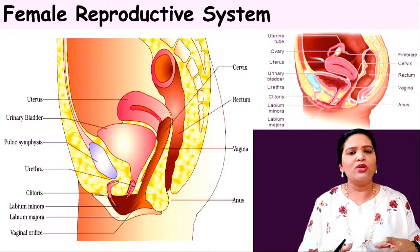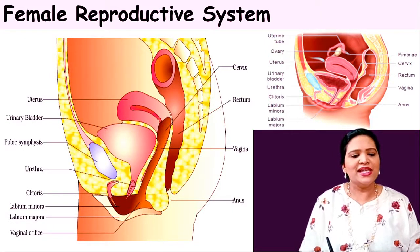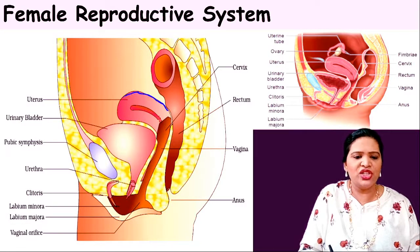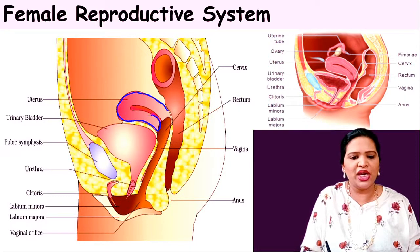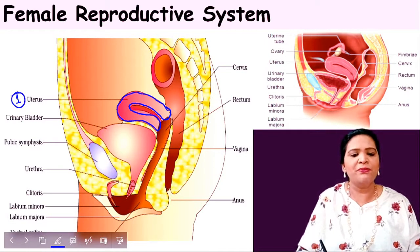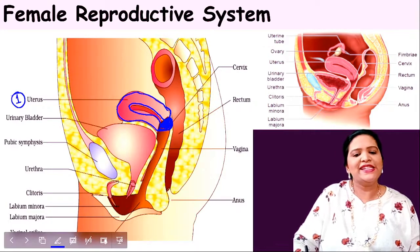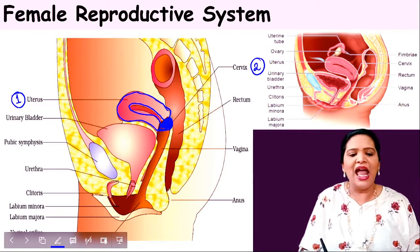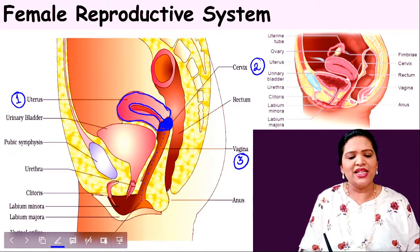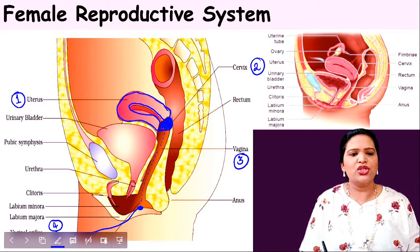Let us look at the structure of the female reproductive system. In this cross-sectional view, the C-shaped structure is the uterus. The end or opening of the uterus is called the cervix. This cervix extends out through a tube-like structure called the vagina, and at the end of the vagina we have the vaginal orifice.